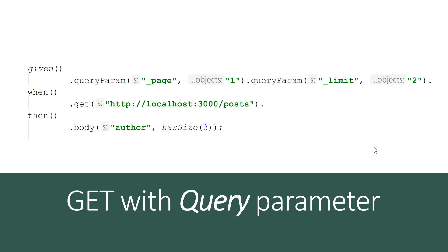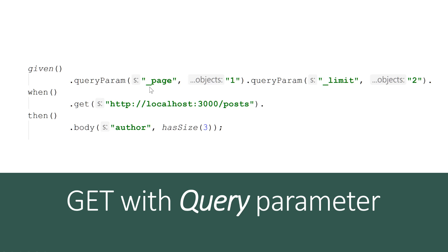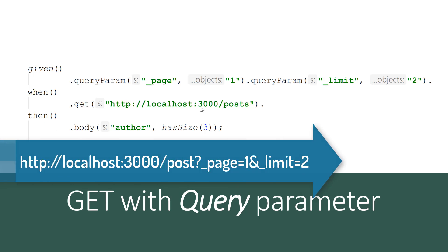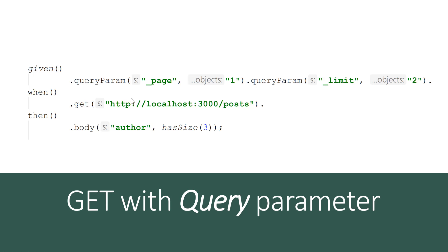The query parameter is similar to the path parameter, but uses a query parameter method. Here we're passing underscore_page as 1 and underscore_limit as 2. The URL gets transformed into http://localhost:3000/posts?_page=1&_limit=2 based on the query parameters supplied. We then verify that the authors list has a size of 3. This is how you can use GET with path parameters and GET with query parameters.